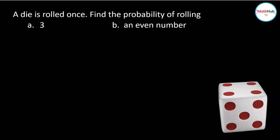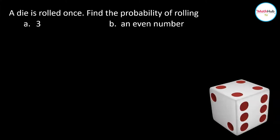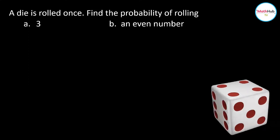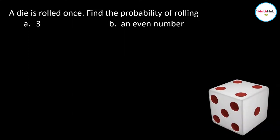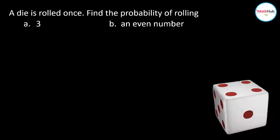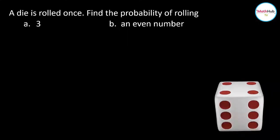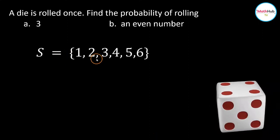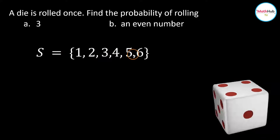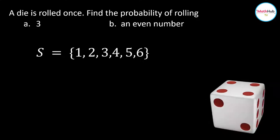To illustrate this, we will consider the following example. A die is rolled once. Find the probability of rolling a 3 and rolling an even number. We will first compute the sample space S of rolling a die once. The sample space S gives us all the possible outcomes. When you roll a die, you either get 1, 2, 3, 4, 5, or 6. All in all, the total number of possible outcomes from the sample space is equal to 6.